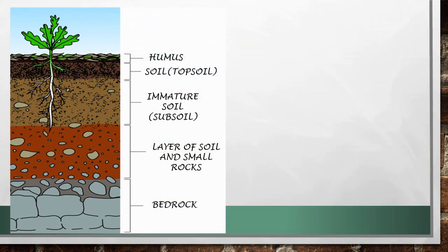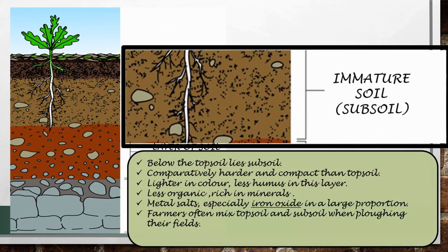Horizon B is the subsoil. Just below the topsoil lies another layer called subsoil or Horizon B. It is comparatively harder and more compact than topsoil. It is lighter in color than topsoil because there is less humus in this layer. This layer is less organic but rich in minerals brought down from the topsoil. It contains metal salts, especially iron oxide, in a large proportion. Farmers often mix Horizon A and Horizon B — that is, topsoil and subsoil — when they plow their fields.